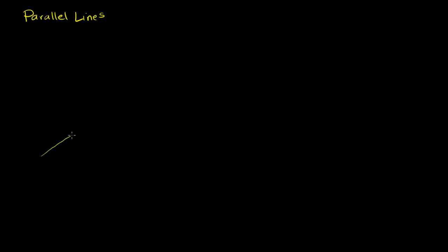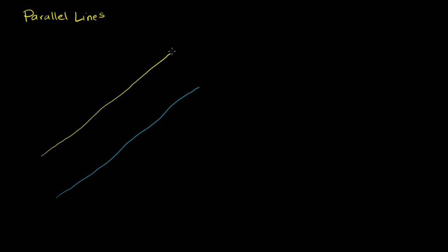So this line here — imagine it keeps going in both directions — and this line in a different color are parallel. They will never intersect, assuming they're going in the exact same direction. Lines that are not parallel, like this green line and this pink line, clearly intersect at some point. Sometimes arrows are drawn in the same direction to show that two lines are parallel.